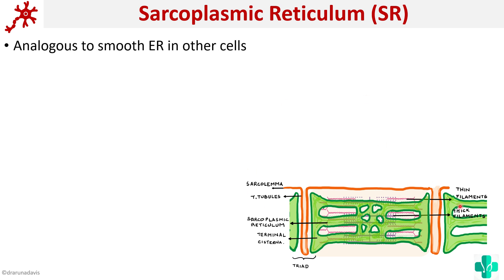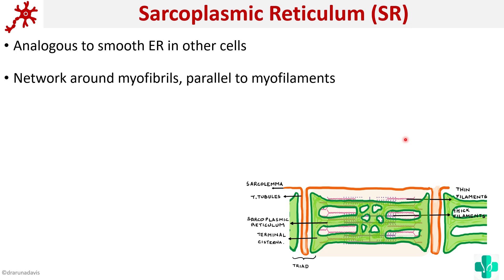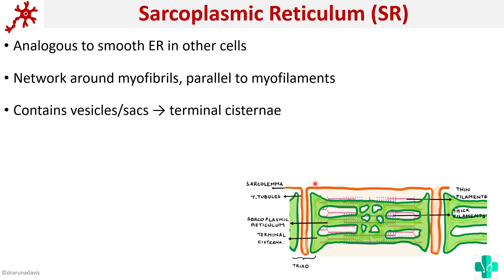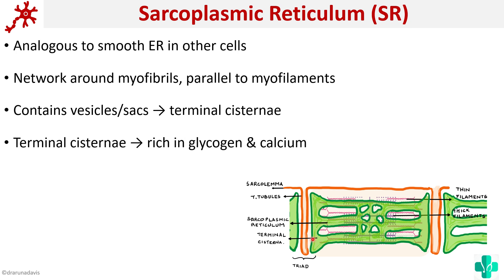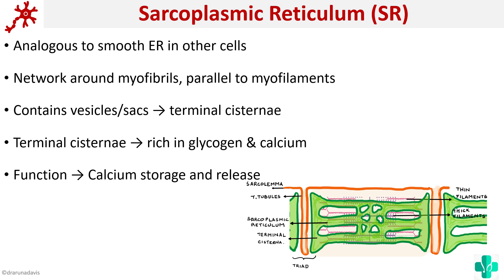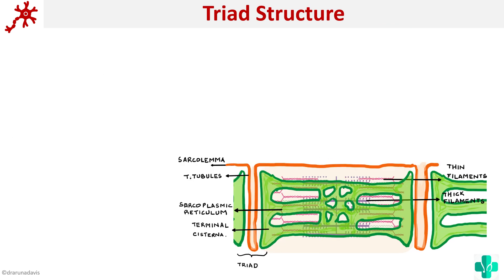The second component is the longitudinal sarcoplasmic reticulum, analogous to the smooth endoplasmic reticulum in other cells. It is a network around the myofibrils, parallel to the myofilaments but perpendicular to the T-tubules. It contains vesicles or sacs — dilated ends called terminal cisternae. The terminal cisternae are rich in glycogen and calcium, and the main function of the sarcoplasmic reticulum is storage and release of calcium.